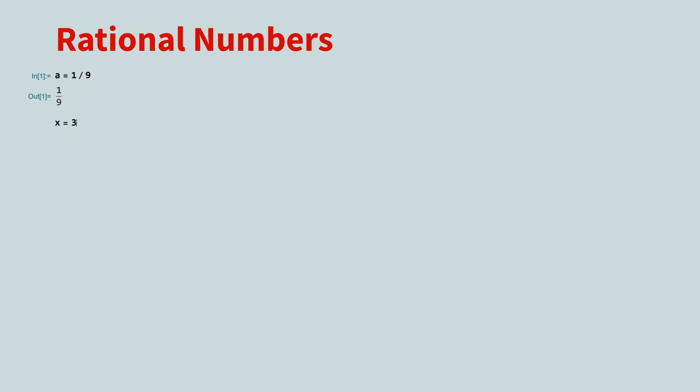Then press Ctrl forward slash, and finally enter the denominator. Press the right arrow to leave fraction typing mode and evaluate the input.